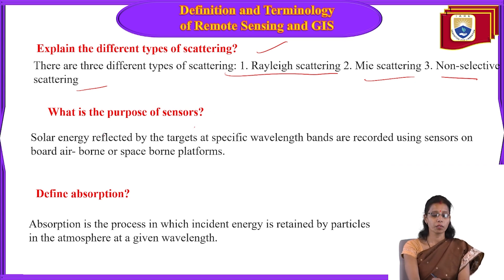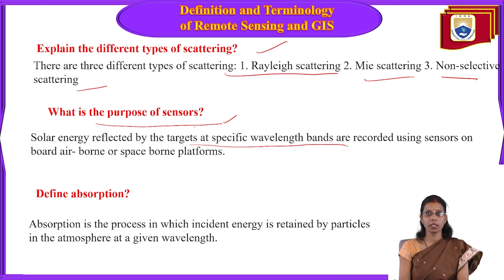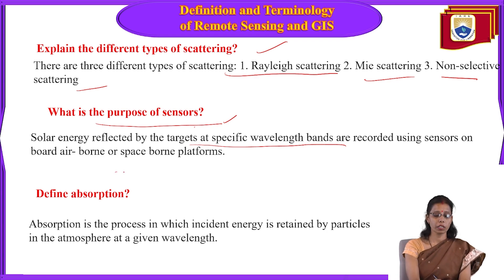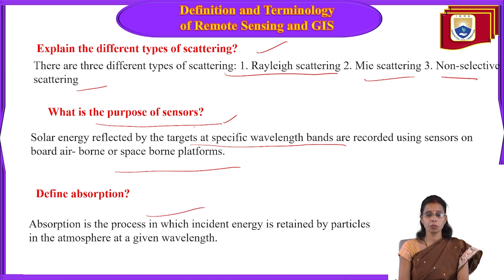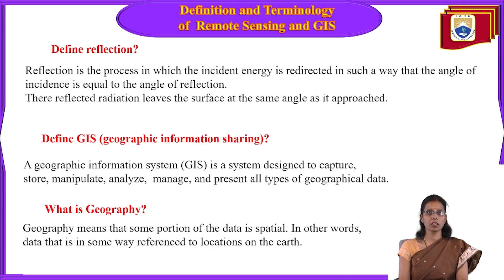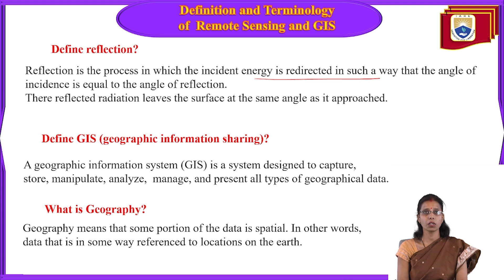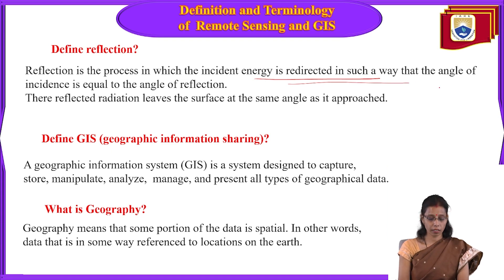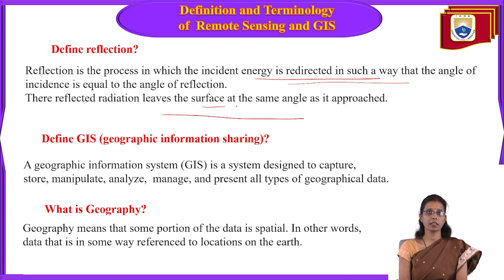Solar energy reflected by targets at specific wavelengths is recorded using sensors on airborne or spaceborne platforms. Absorption is the process in which incident energy is retained by particles in the atmosphere at a given wavelength. Reflection is the process in which incident energy is redirected such that the angle of incidence equals the angle of reflection, and reflected radiation leaves the surface at the same angle as it approaches.